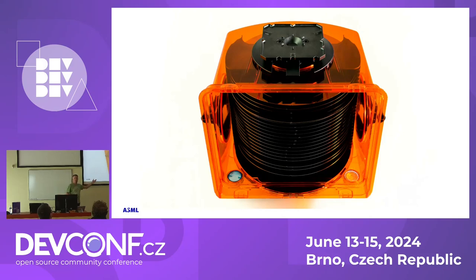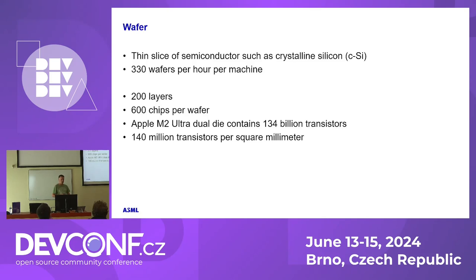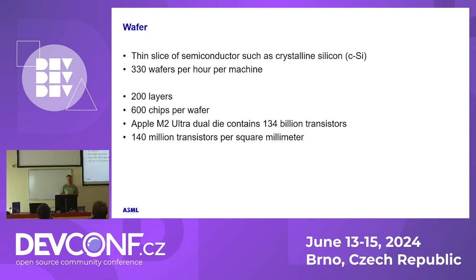Typically in factories for our customers, we don't transport them manually. We put them in this — called a front opening universal pot. There are 20 in them, and those are then used to create chips. On a wafer, you can have about 200 layers, depending on what kind of chip you make. We can have about 600 chips per wafer and 130 million transistors per square millimeter. That's pretty insane to imagine doing things on such a small scale.